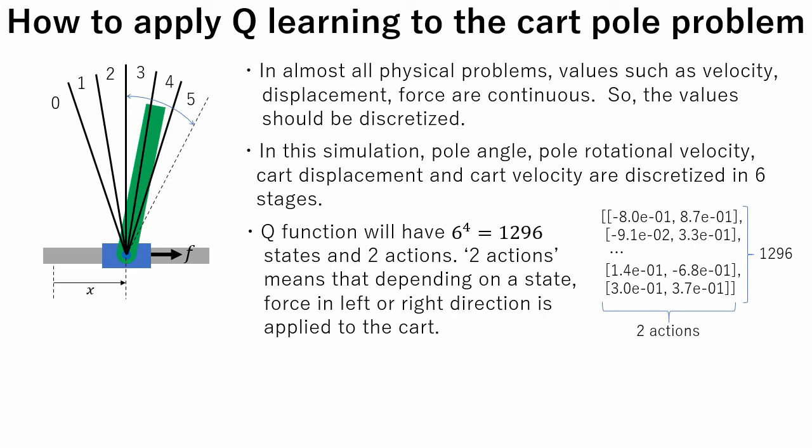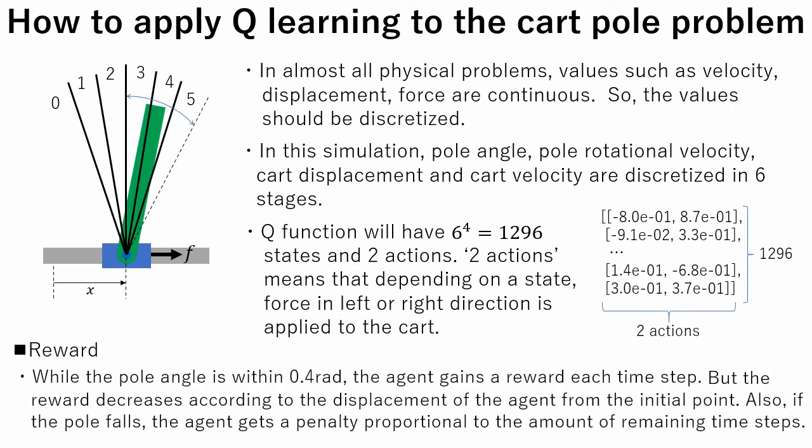Now a word about reward. Setting reward properly is very important for learning the right policy. In this simulation, while the pole angle is within 0.4 radians, the agent gains a reward each time step. But the reward decreases according to the displacement of the agent from the initial point.